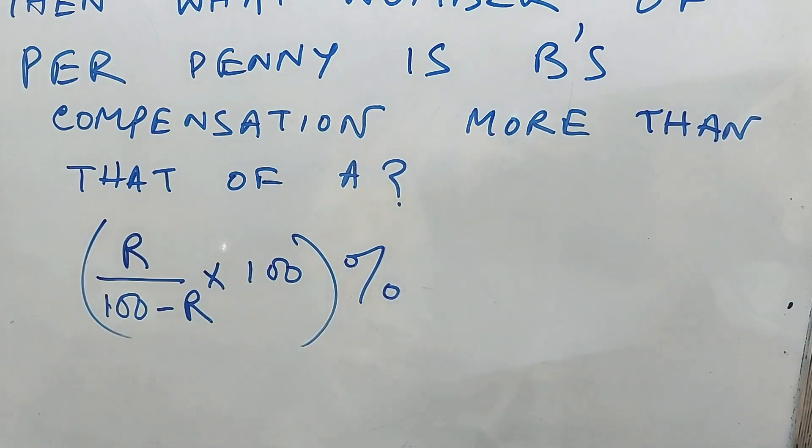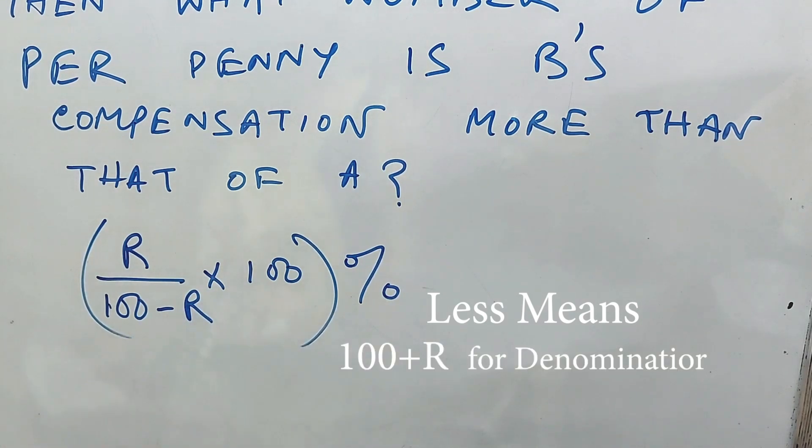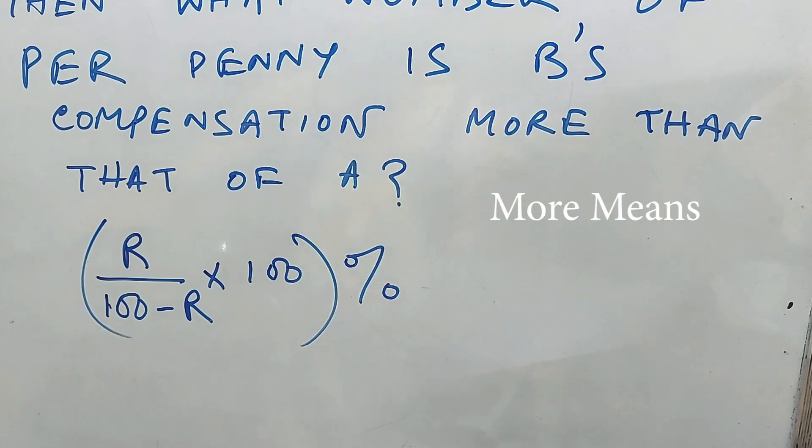Whenever the required percentage will be less, the denominator will be plus. And when you see the required percentage is more, the denominator will be less. With the less denominator, you'll get more value. This is the simple concept, my friend.